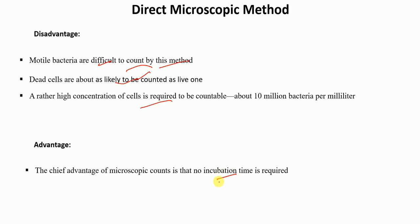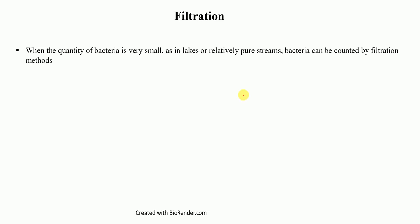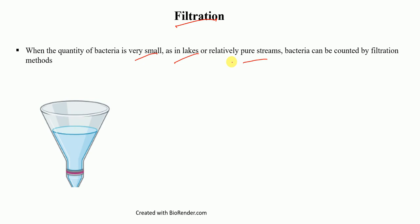The next method used for measuring bacterial growth is called filtration. This method is suitable when the quantity of bacteria present in the sample is very small, for example as in lakes or relatively pure streams. Bacteria can be counted by filtration. We simply take the sample and filter it through a membrane. The membrane is selected so that it only lets particles smaller than its pore size pass through.